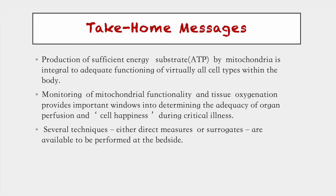To summarize, production of sufficient ATP by mitochondria is integral to the adequate functioning of virtually all cell types in the body. Monitoring of mitochondrial functionality and tissue oxygenation provides important windows to determine the adequacy of organ perfusion in critically ill patients. Several techniques — either direct measures or surrogates — are available to perform this assessment at the bedside. Thank you.